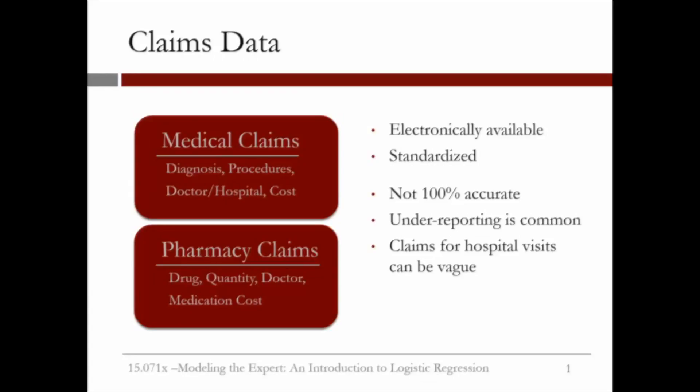Claims data are electronically available. They are standardized and use well-established codes. However, since humans generate them, they are not 100% accurate. Under-reporting is common, in the sense that it's a tedious job to record these claims, and as a result, often people under-report them. Also, claims for hospital visits can be vague.